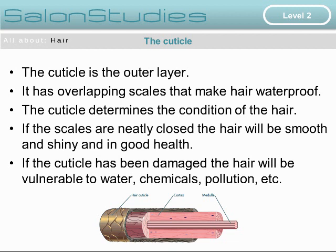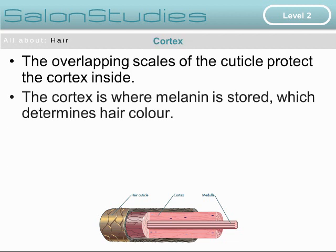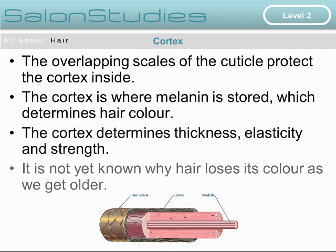The cortex. The overlapping scales of the cuticle protect the cortex inside. The cortex is where the melanin, or hair pigments, are stored, and this determines the hair colour. The cortex determines the thickness, the elasticity and the strength of the hair. It is not yet known why hair loses its colour when we get older.